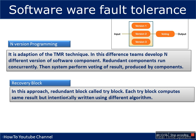The second technique is recovery block. For every module there is a redundant block, also known as a try block. Every try block computes the same result but intentionally uses a different algorithm — so during development, every team intentionally uses a different algorithm to calculate the same result. This approach is called recovery block.